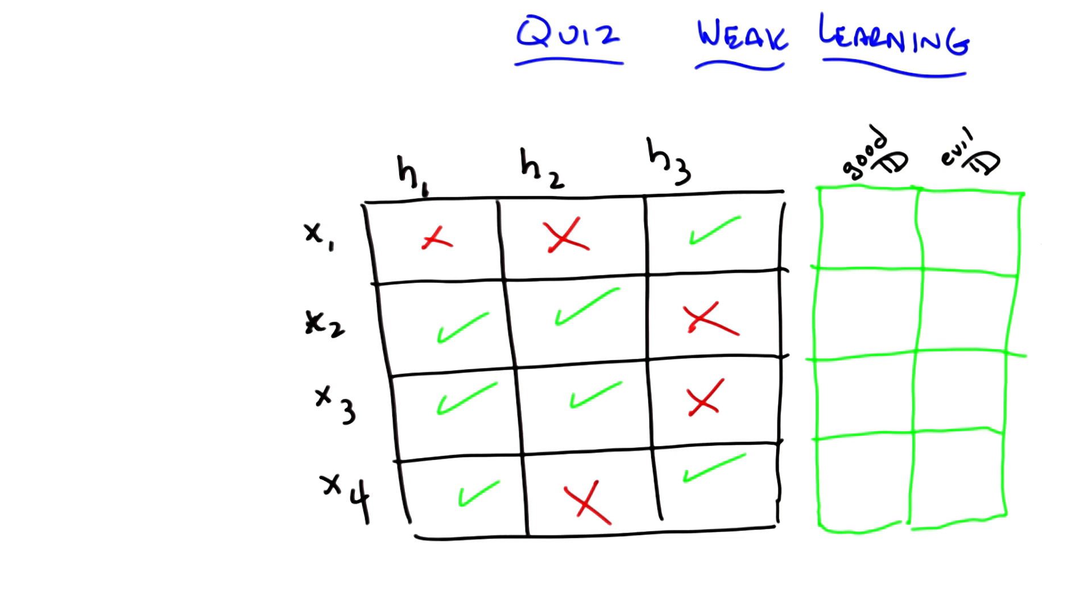Here's what I want you to do. I want you to come up with a distribution over the four different examples such that a learning algorithm that has to choose between one of those three hypotheses will in fact be able to find one that does better than chance. That is, has an expected error greater than a half. Okay.